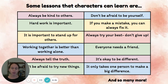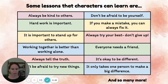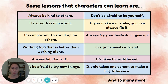Here's a chart of just some examples of those lessons. A character might learn to always be kind to others. The character could learn to not be afraid to be yourself. Maybe they learn that everyone needs a friend, or that working together is better than working alone. The character might also learn that they should always tell the truth, or that if you make a mistake, you can always fix it. These are just some examples — there are so many more lessons that a character could learn in a fiction story.